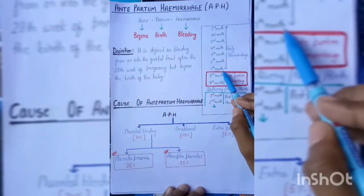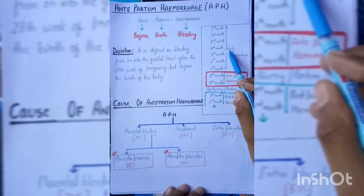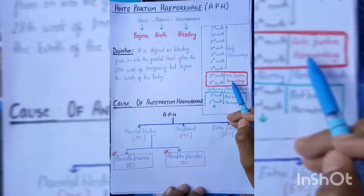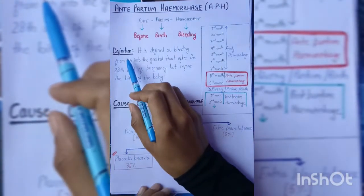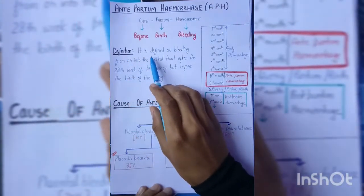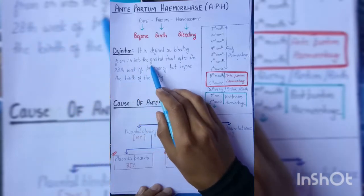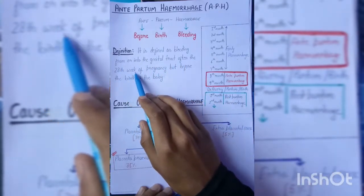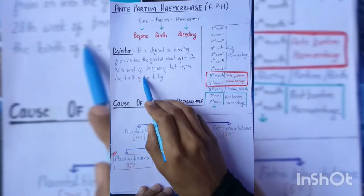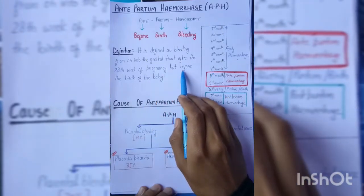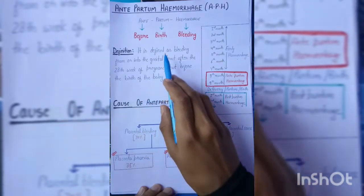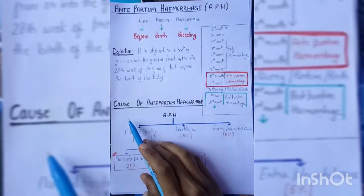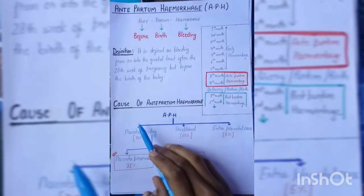After seven months and before delivery of the baby is known as antepartum hemorrhage, and after delivery it is called postpartum hemorrhage. The definition of APH: it is defined as bleeding from or into the genital tract after the 28th week — after seven months of pregnancy — but before the birth of the baby.